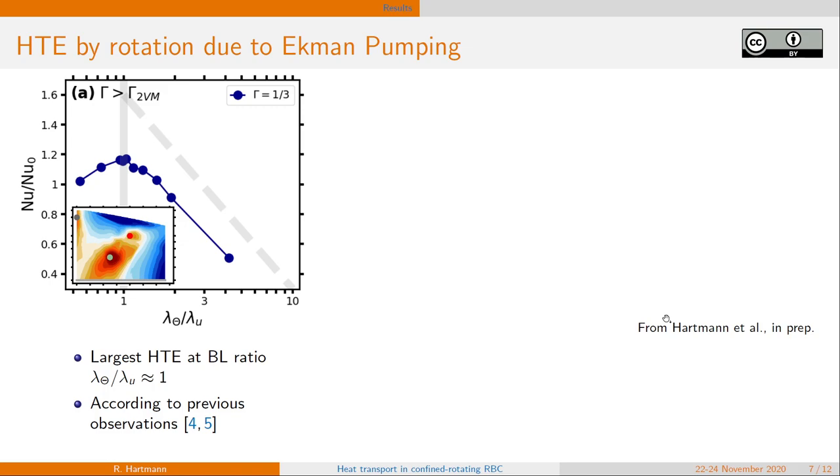In our case, having a look on the heat transport for fixed aspect ratio, considering the variation in rotation and mapping it on the boundary layer ratio of thermal over kinetic boundary layer, we see as expected our heat transport is largest for boundary layer ratio of approximately one. If we now proceed to smaller aspect ratios, we observe a slight shift, but still we have the peak at the boundary layer ratio of approximately one.